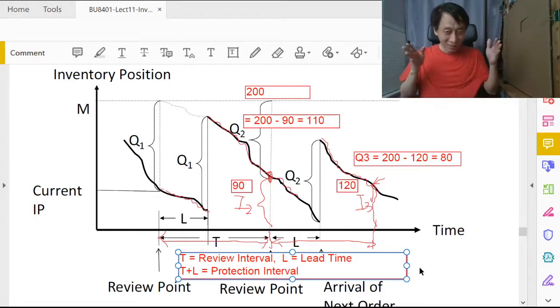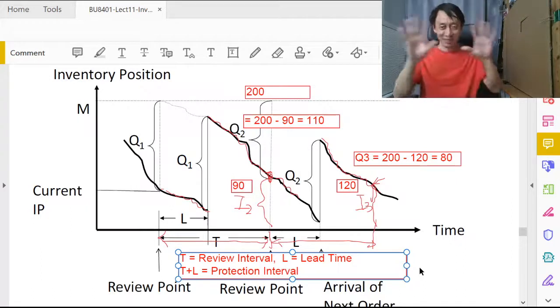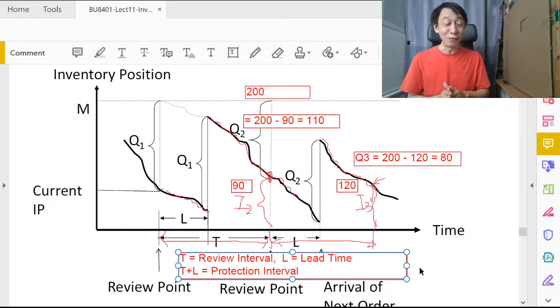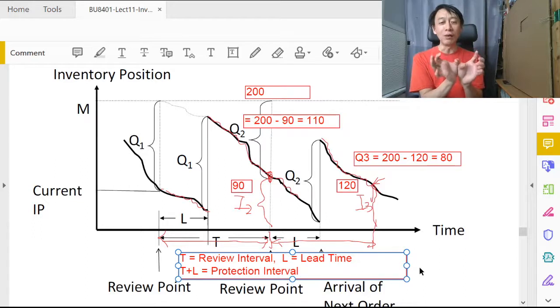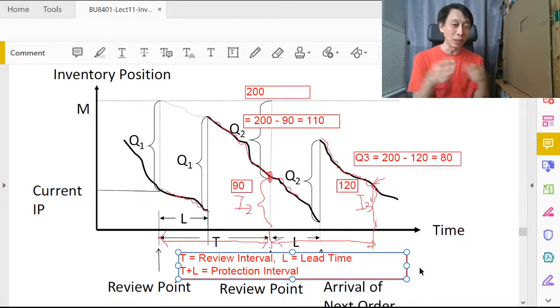Here we have a longer interval of not knowing the demand. It's no longer just lead time, but the whole review period is a dark space where we have no idea what the inventory level is. We need to ensure that both in the review interval and lead time we're conservative. We add them together to have good knowledge about the distribution during T plus L.